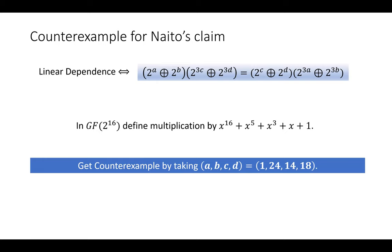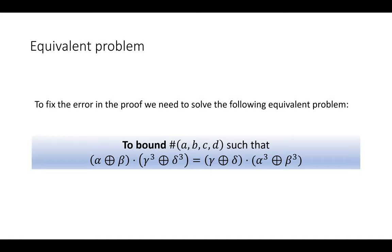Now, what is the equivalent problem that we pose? We pose what needs to be solved in order to fix the error in the proof. We have to bound the number of tuples (A, B, C, D) such that the linear dependence condition holds. Recall that alpha is 2 to the power A, beta is 2 to the power B, gamma is 2 to the power C, and delta is 2 to the power D. So we have to bound the number of such tuples, and this is the crux problem of the paper.